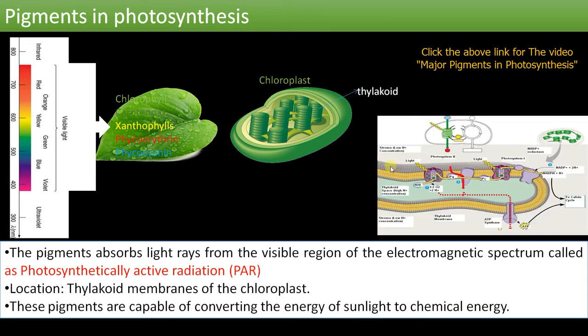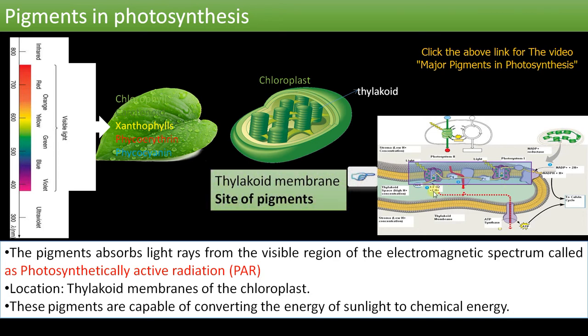This is the exact site of pigments in photosynthesis - the thylakoid membrane. The specialty of these pigments is that they can convert light energy into chemical energy during the light reaction of photosynthesis.